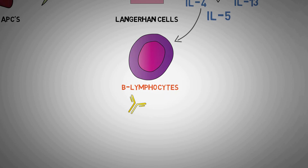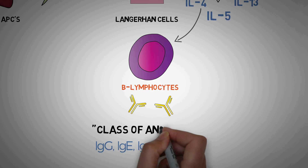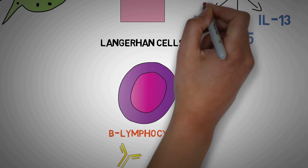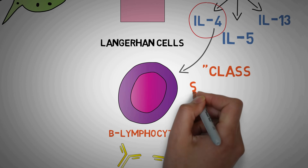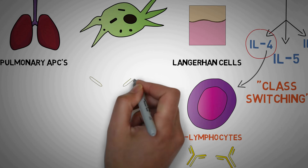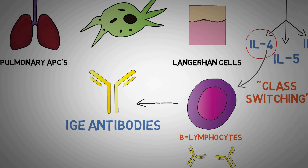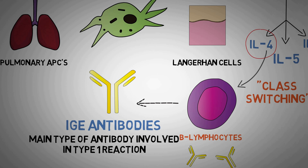As most of you may already know, antibodies are produced by B cells, and the type of antibodies that a B cell produces is known as the class of antibodies, whether it be IgA, IgG or IgM. Interleukin-4 acts on B cells and leads to a phenomenon known as class switching, which essentially means that interleukin-4 makes the B cells switch the class of antibodies they are producing to immunoglobulin E. So the B cells which are now exposed to interleukin-4 only produce IgE. The main type of antibody involved in type 1 reaction is IgE.